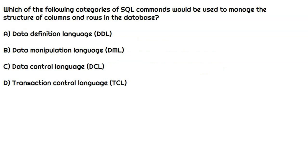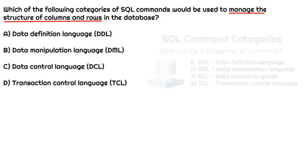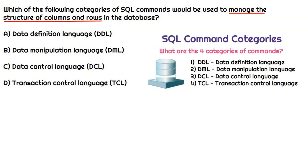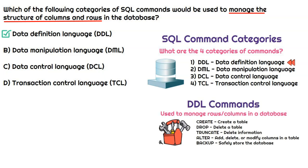This question asks which category of SQL commands would be used to manage the structure of columns and rows in a database — such as adding, deleting, or modifying rows. The four command categories are DDL, DML, DCL, and TCL. The category that allows us to manage the structure of columns and rows is data definition language, or DDL commands. There are five common types of DDL commands, and they all relate to creating or modifying tables and rows in a database. So the correct answer is data definition language — we define the columns and rows to manage the database properly.